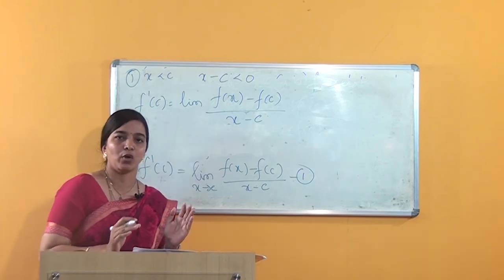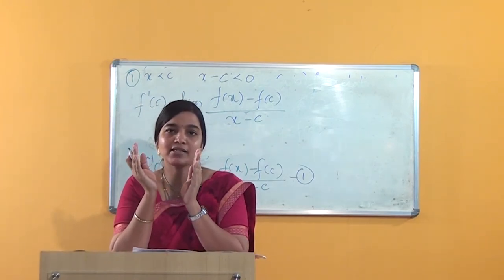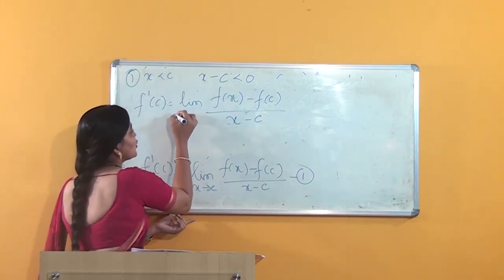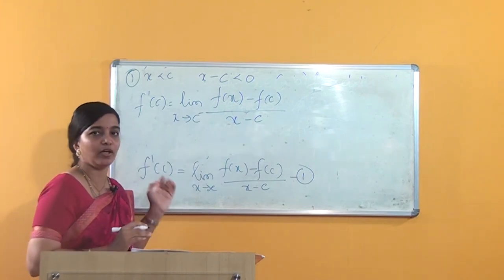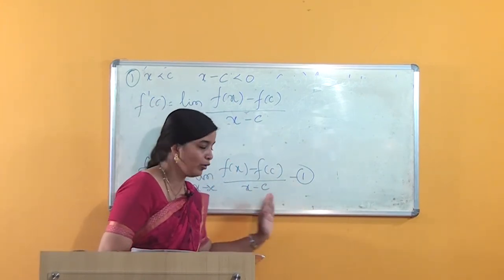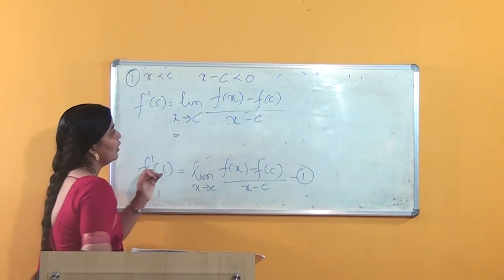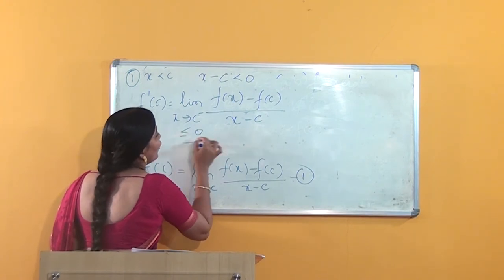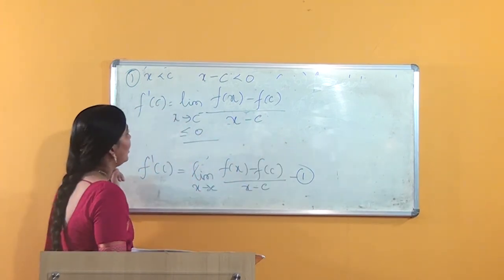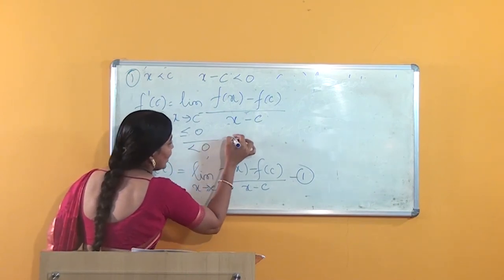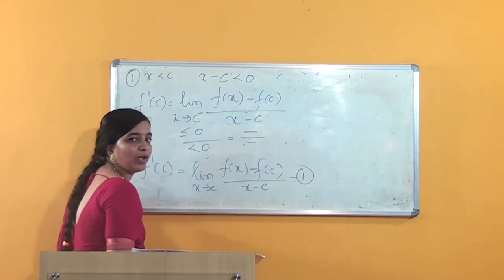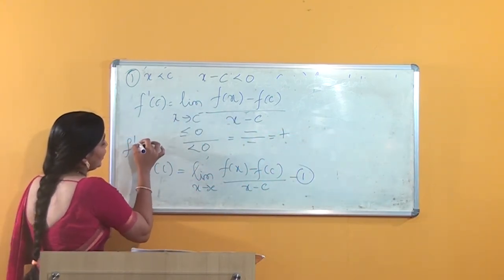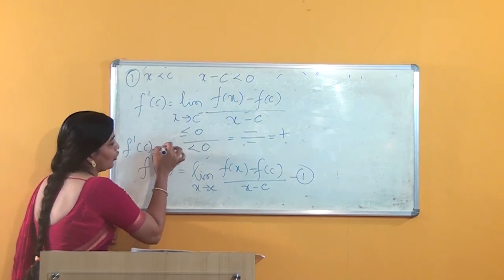Case 1: x is less than c. Then x − c is less than 0. Substituting into the limit expression, f'(c) equals the limit of [f(x) − f(c)] / (x − c) as x tends to c from the left (x → c⁻). Here the numerator f(x) − f(c) ≤ 0 and the denominator x − c < 0, so both are negative. Dividing gives a positive value, so f'(c) ≥ 0.